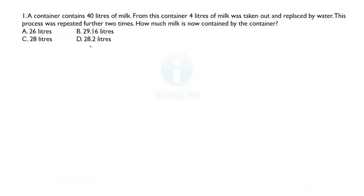First question: a container contains 40 litres of milk. From this container, 4 litres of milk was taken out and replaced by water. We are doing a procedure of taking out milk and adding water in its place. This process was repeated further two times, so the total number of times we are doing this procedure is n equals three. We use a direct formula approach to save time: the final concentration of the first mixture is given by x into (1 minus y/x) to the power n, where n is the number of times the process is repeated.